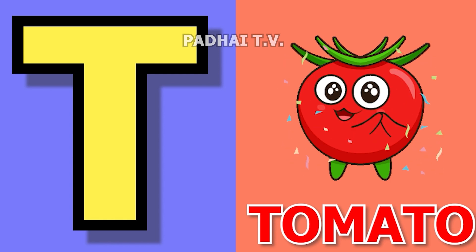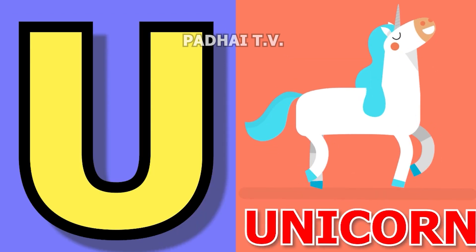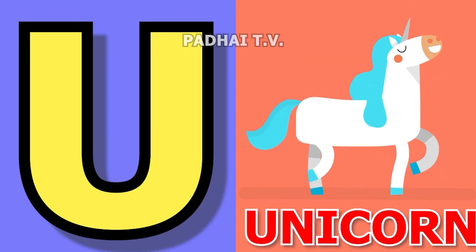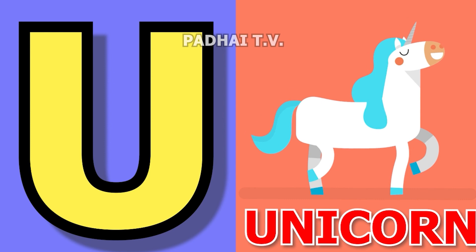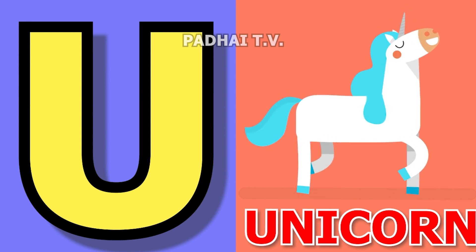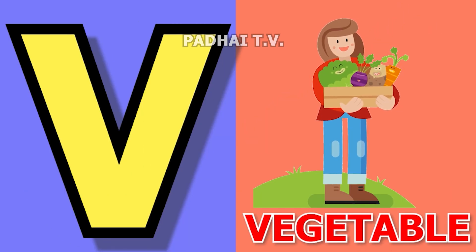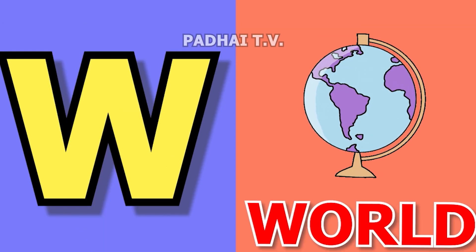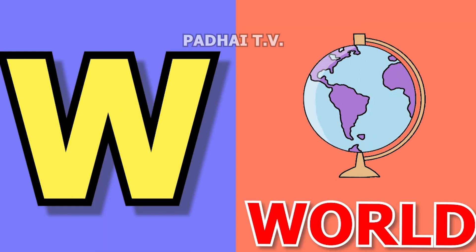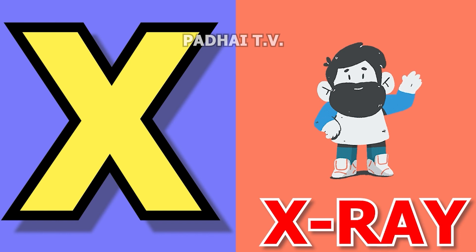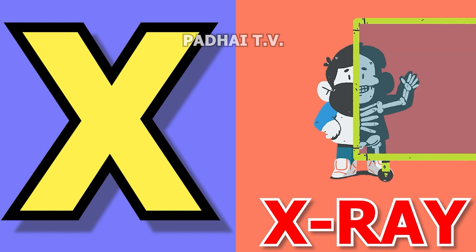T for tomato, tomato means tomato. U for unicorn, unicorn means unicorn. V for vegetable, vegetable means subji. W for wild, wild means dunya.